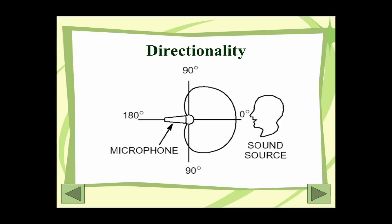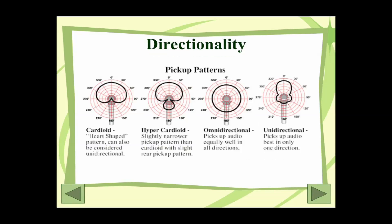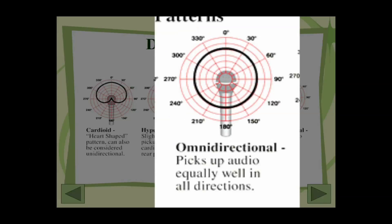Here you can see the reception bubble for a microphone. The microphone is in the center and it kind of looks like an ice cream cone, with a heart shape running around it — this is what we talk about when discussing directionality. You can see the person talking, and their sound waves are moving toward the microphone. The microphone picks up the majority of its sound from straight in front of it, but can also pick up from the side and even a little bit from the back. That's called a pickup pattern, and here are four different pickup patterns we'll typically see. The third one from the left is the omnidirectional, which picks up audio equally from all directions.